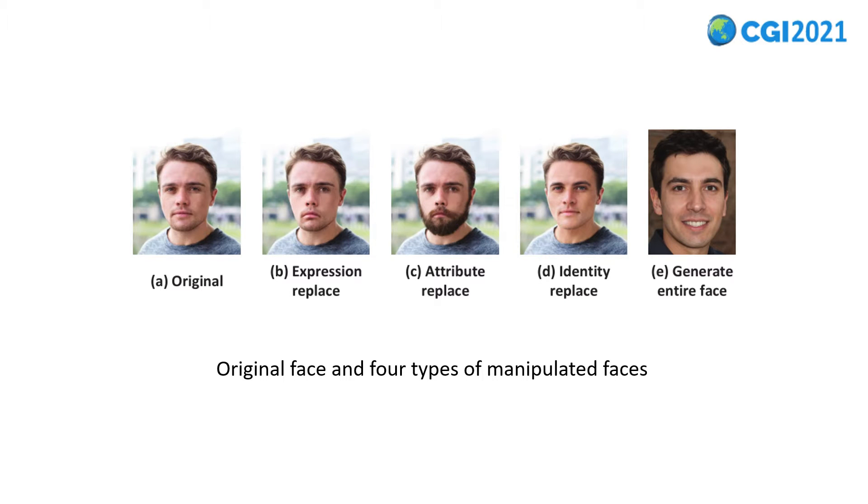AI-synthesized faces are threatening on the internet in the form of pictures or videos. Based on forged areas, manipulated images can be classified into two categories. The first method only tampers with some specific areas, such as expressions, attributes, or identities.